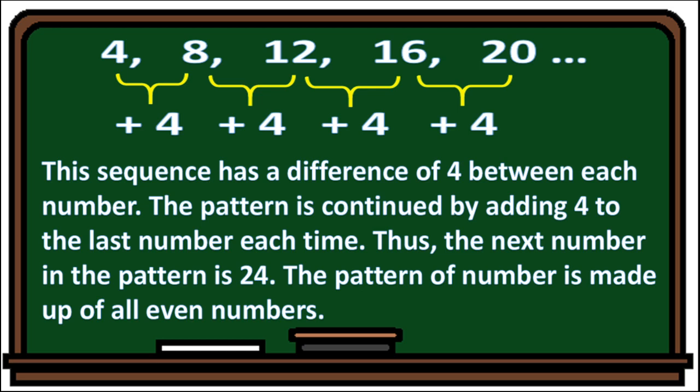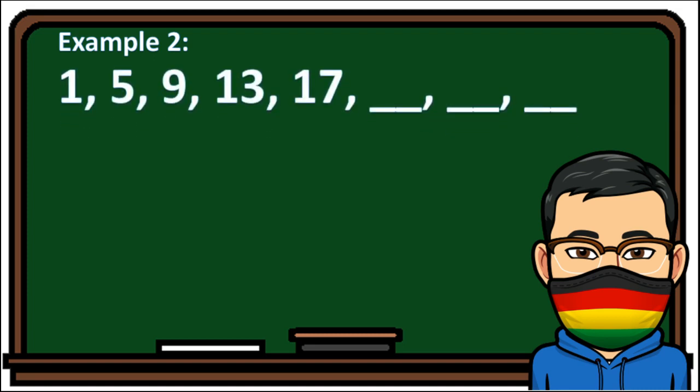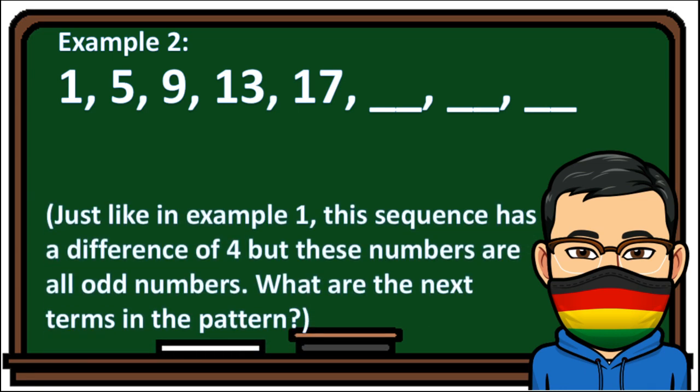The pattern of numbers in Example 1 is made up of all even numbers. Example 2: 1, 5, 9, 13, and 17. What will be the next three numbers? Just like in Example 1, this sequence has a difference of 4, but these numbers are all odd numbers.